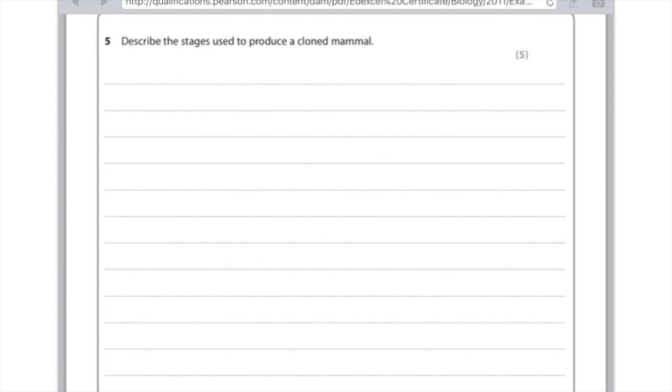Describe the stages used to produce a cloned mammal. Right, this is what I was just talking about. You need the egg cell from basically any mammal of the same species, you need to take out a body cell from the animal that you want to clone, you need to remove the nucleus from both, you need to insert the body cell nucleus into the now empty egg cell and use an electric shock to bind them.